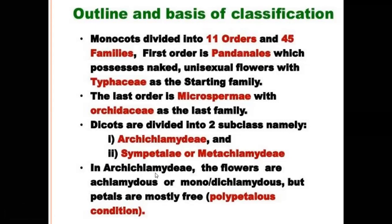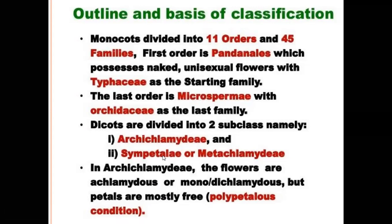In Archichlamidae, achlamydous means perianth is absent. Perianth includes calyx and corolla. Monochlamydous means calyx and corolla are present in a single whorl. Dichlamydous means calyx in the outer whorl and corolla in the inner whorl. But in dichlamydous condition, petals are mostly free — called polypetalous condition. From Bentham and Hooker's classification, polypetalae and monochlamidae are combined under Archichlamidae.